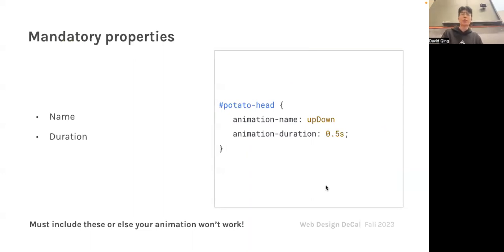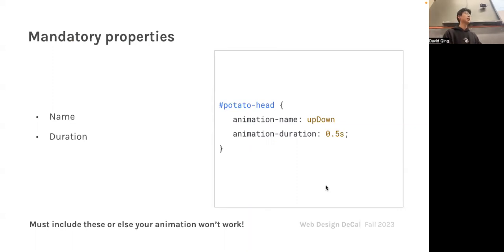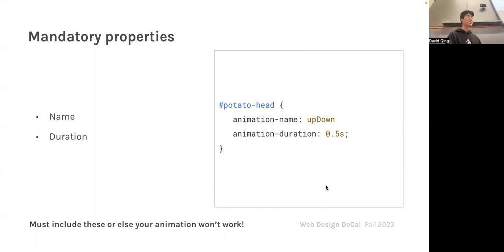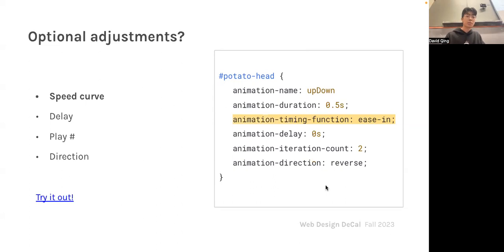The mandatory properties — the bare minimum — are the animation name and the duration. Without those, the computer has no idea what you want. The rest are optional adjustments. At the bare minimum, if you're not seeing any movement, double check that you have the name and duration set.